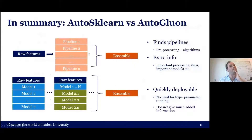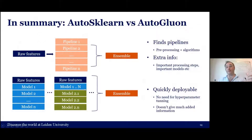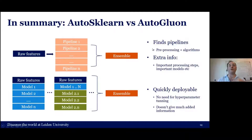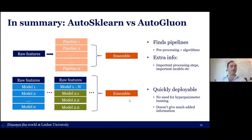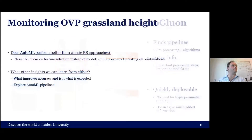With Auto-sklearn you have all the information about pre-processing steps so you can find patterns to improve your model. With AutoGluon you get very good accuracy very quickly. That's the big difference between them.